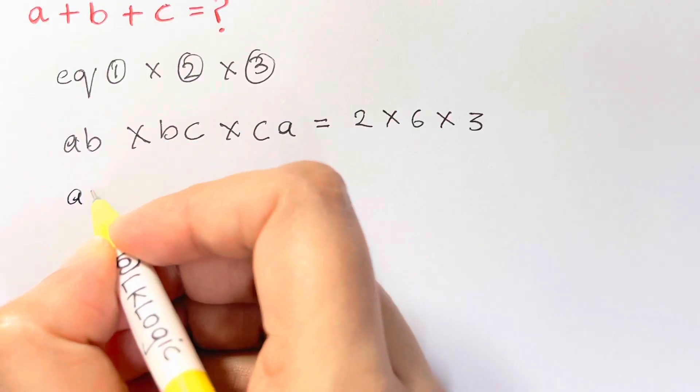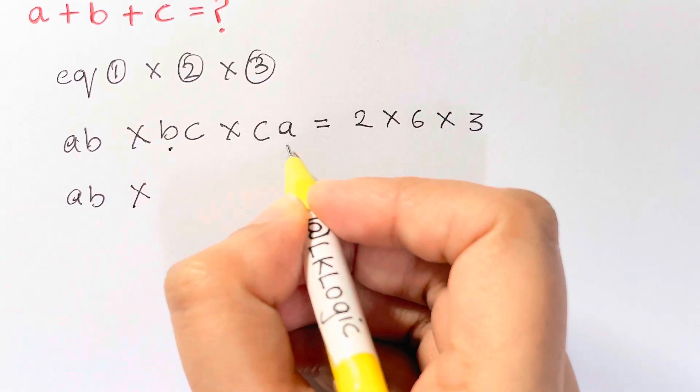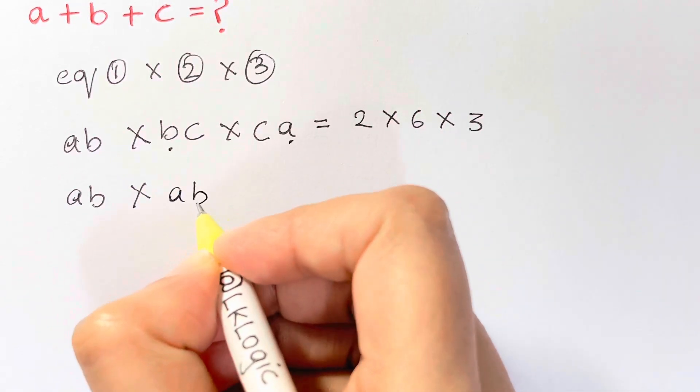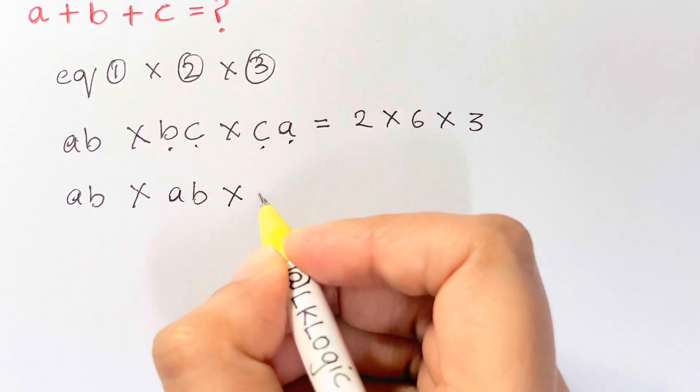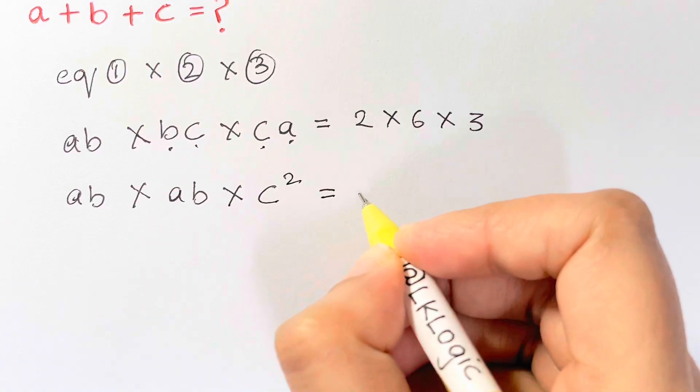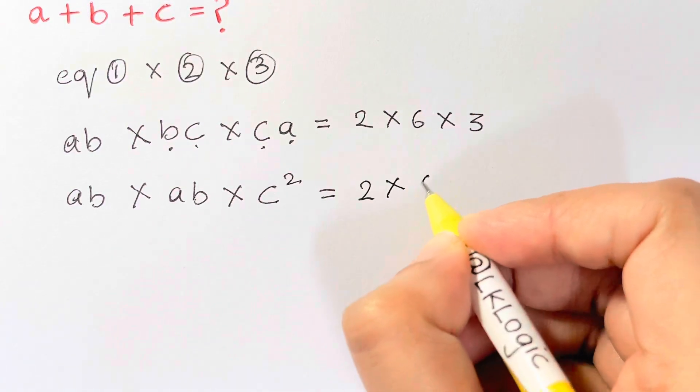Now we're just going to write AB times B from here and A from here, that's AB, times C times C is C squared, is equal to 2 times 6 times 3.